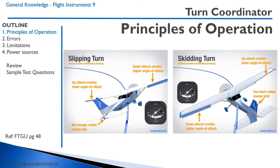This is just an example of what slipping turns and skidding turns look like — this is from Bold Method. You can check out their YouTube channel and website; they have a lot of great information. In a slipping turn, we don't have enough rudder and the ball falls towards the inside of the turn. Conversely, in a skidding turn, we have too much rudder and it causes the ball to go to the outside of the turn.